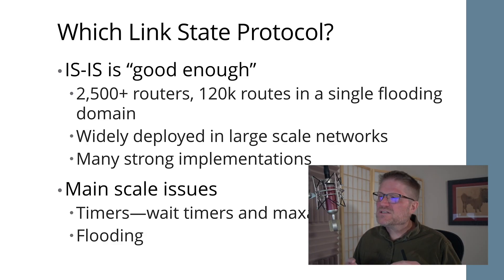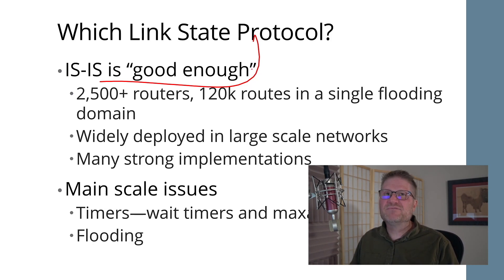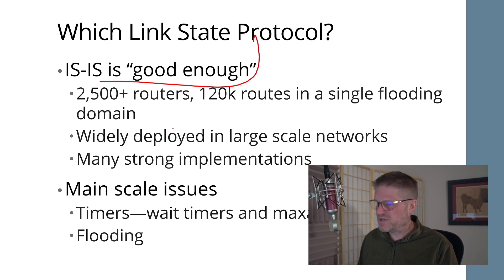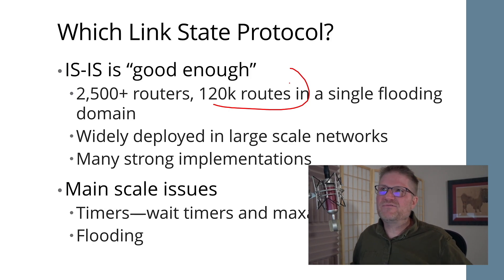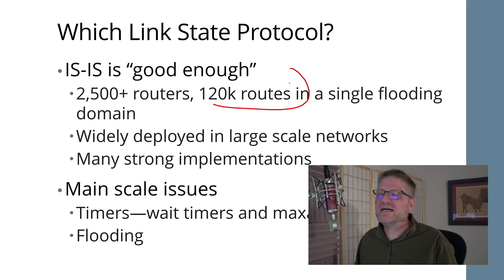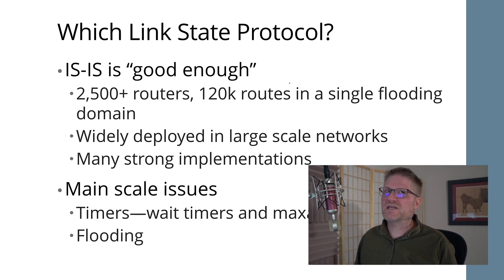I consider ISIS to be good enough. I have seen ISIS run in much larger networks than you might imagine — in a single flat flooding domain, no level one/level two boundaries, flat level two, large-scale flooding domains. I've seen five to six thousand routers with ten to thirty thousand routes. I've actually seen a 2,620-router network with 120,000 routes in a single flooding domain converging on initial convergence in under 40 seconds, and on single link/node failures in only a few hundred milliseconds, even in a virtual environment.